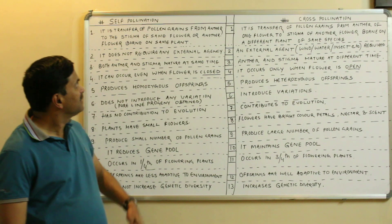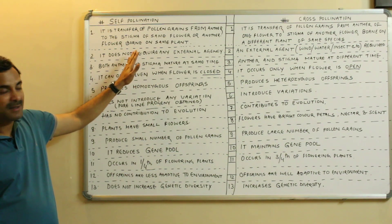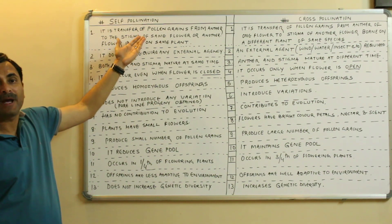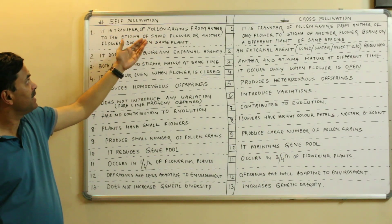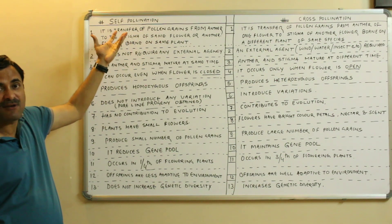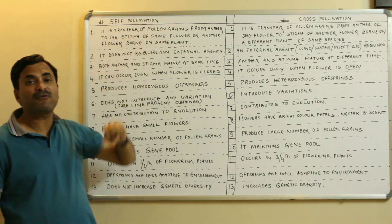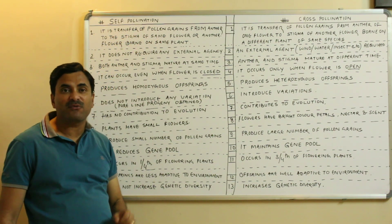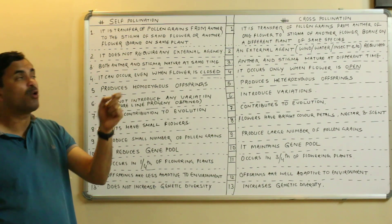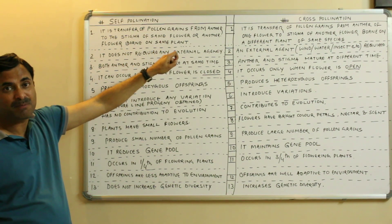We are discussing today a very important topic — the differences between self-pollination and cross-pollination. The very first point is: what is self-pollination? It is the transfer of pollen grains from anther to stigma of the same flower, or a different flower, but which is born on the same plant.